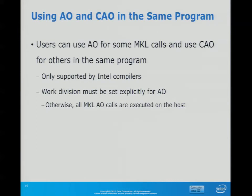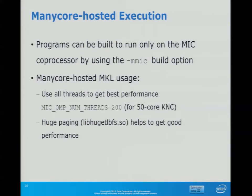Automatic offload and compiler assisted offload work together — you can mix them in the same program without interference. For many-core hosted execution, this is useful for the initial port of a large application. You link against MKL the same way as on the regular Xeon side, just adjusting the linker path to where the MIC libraries are found — we'll see this in the makefiles and examples.